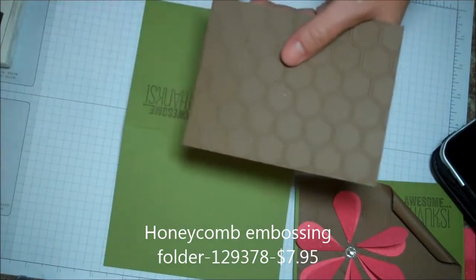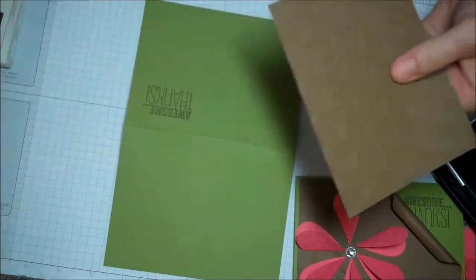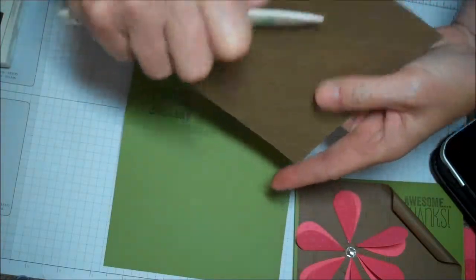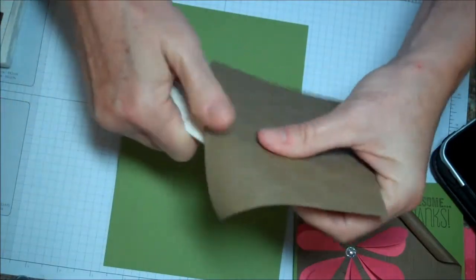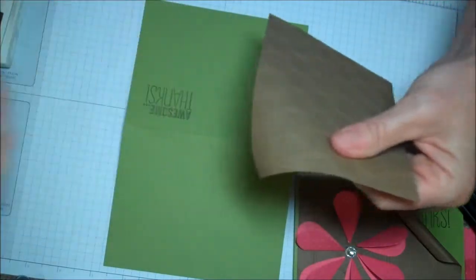The first thing I'm going to do is roll back the edges. So if you'll take a bone folder and just kind of gently, because this Honeycomb tears easy.